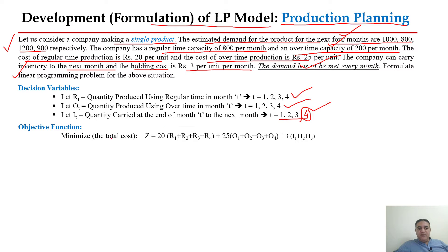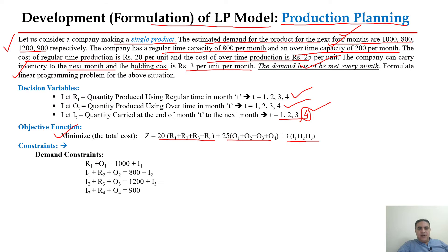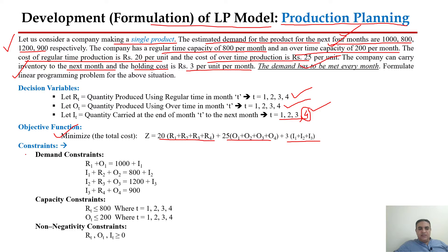Our objective function is to minimize the total production cost — this includes the total regular time production cost, overtime production cost, and inventory cost. We have a set of constraints. One is the demand constraint, or inventory balancing constraint. Since no initial inventory is mentioned, the inventory balancing constraint is: inventory from the last period (i_{t-1}) plus regular time production quantity plus overtime production quantity equals d_t (demand of that period) plus ending inventory i_t.